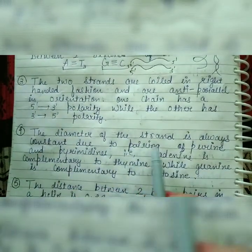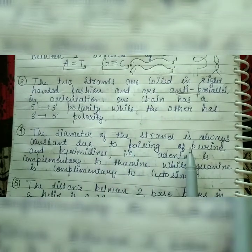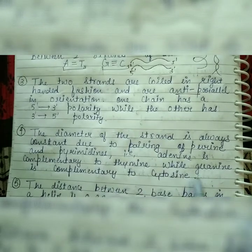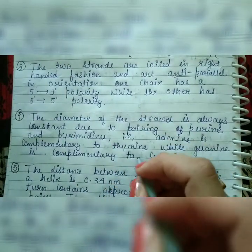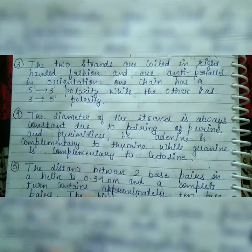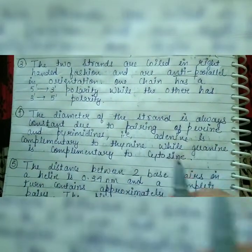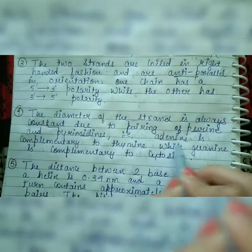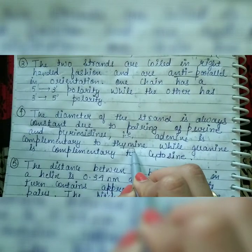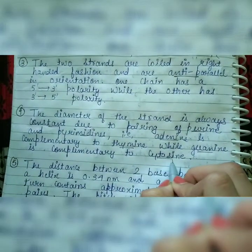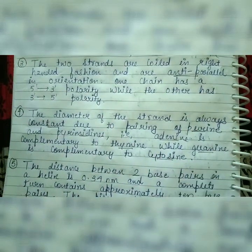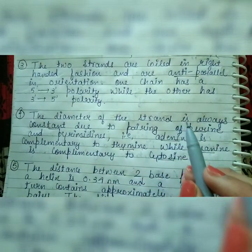Fourth, the diameter of the helix is always constant due to the pairing of purines and pyrimidines — adenine pairs with thymine, and guanine pairs with cytosine. Because the pairing is always purine with pyrimidine, the diameter remains constant. It will not happen that A pairs with G or C pairs with T.